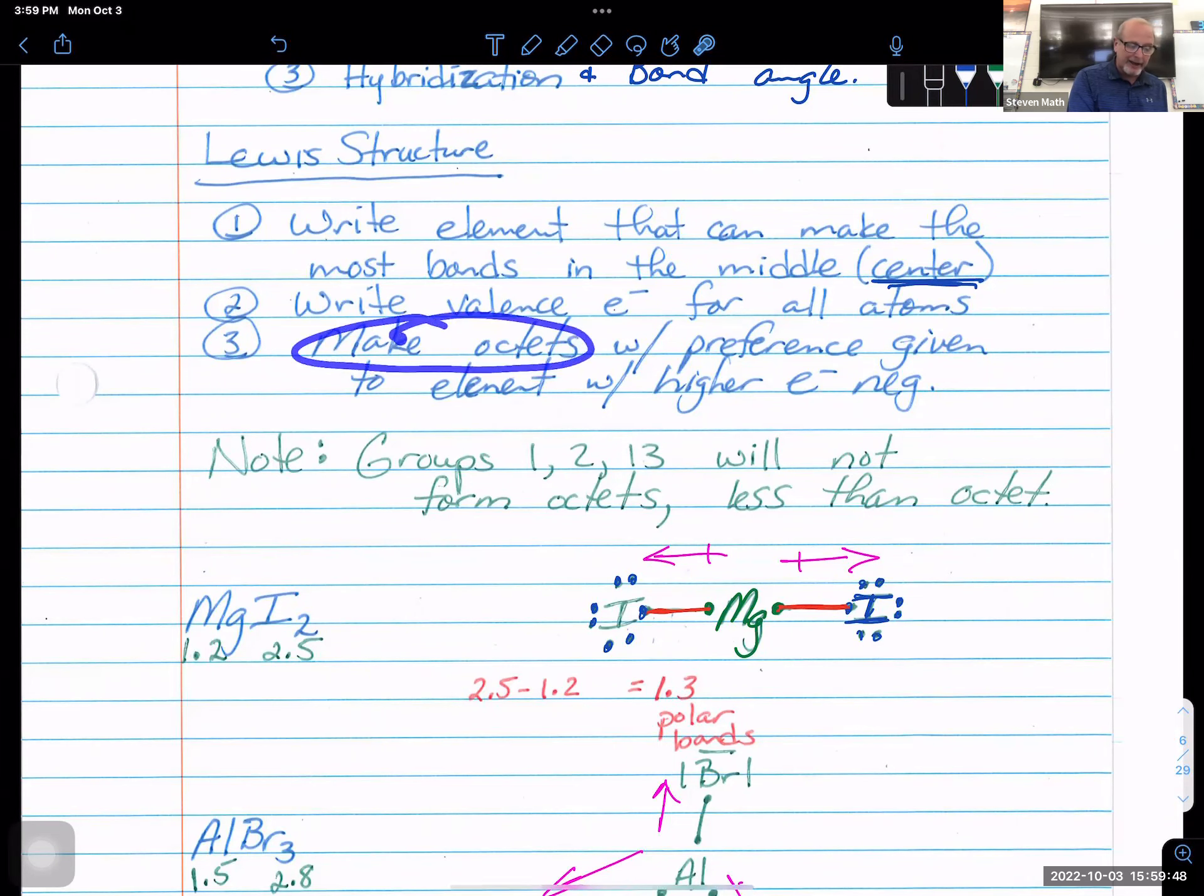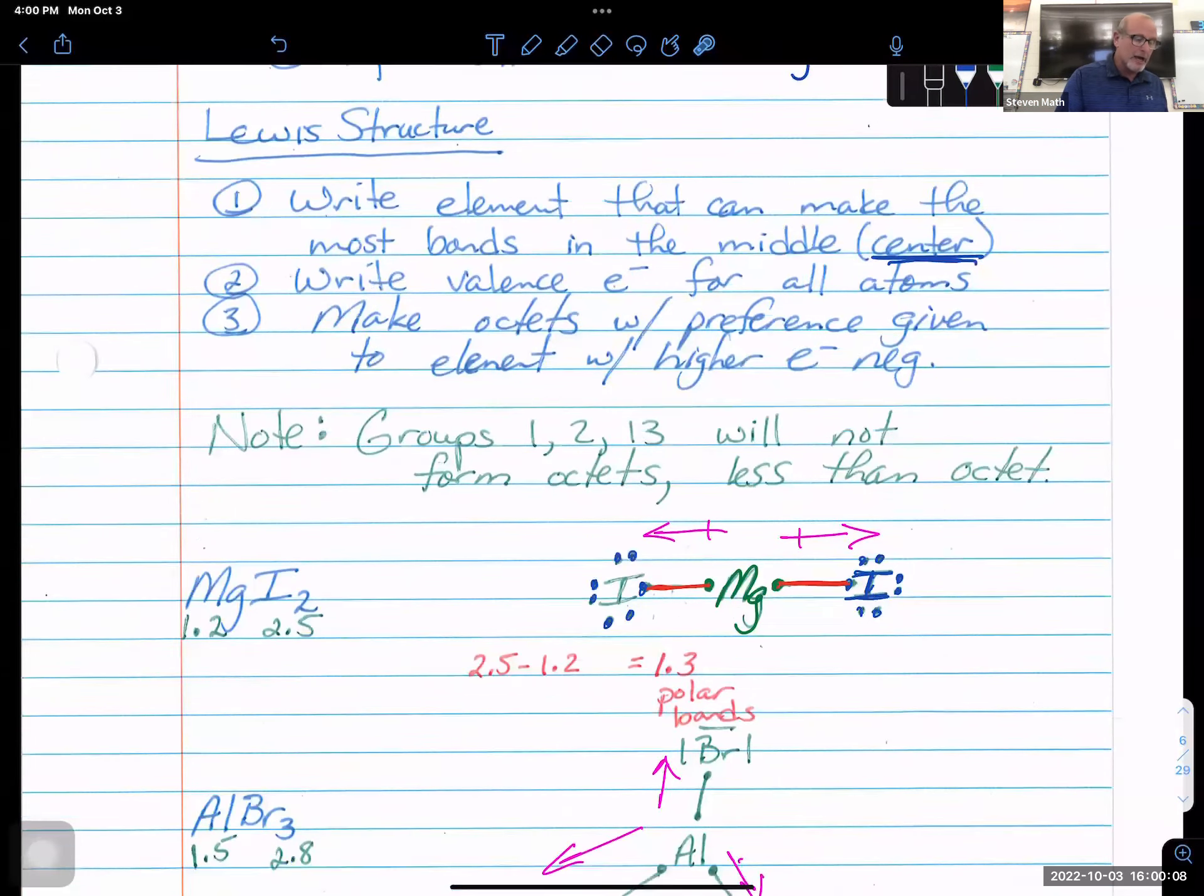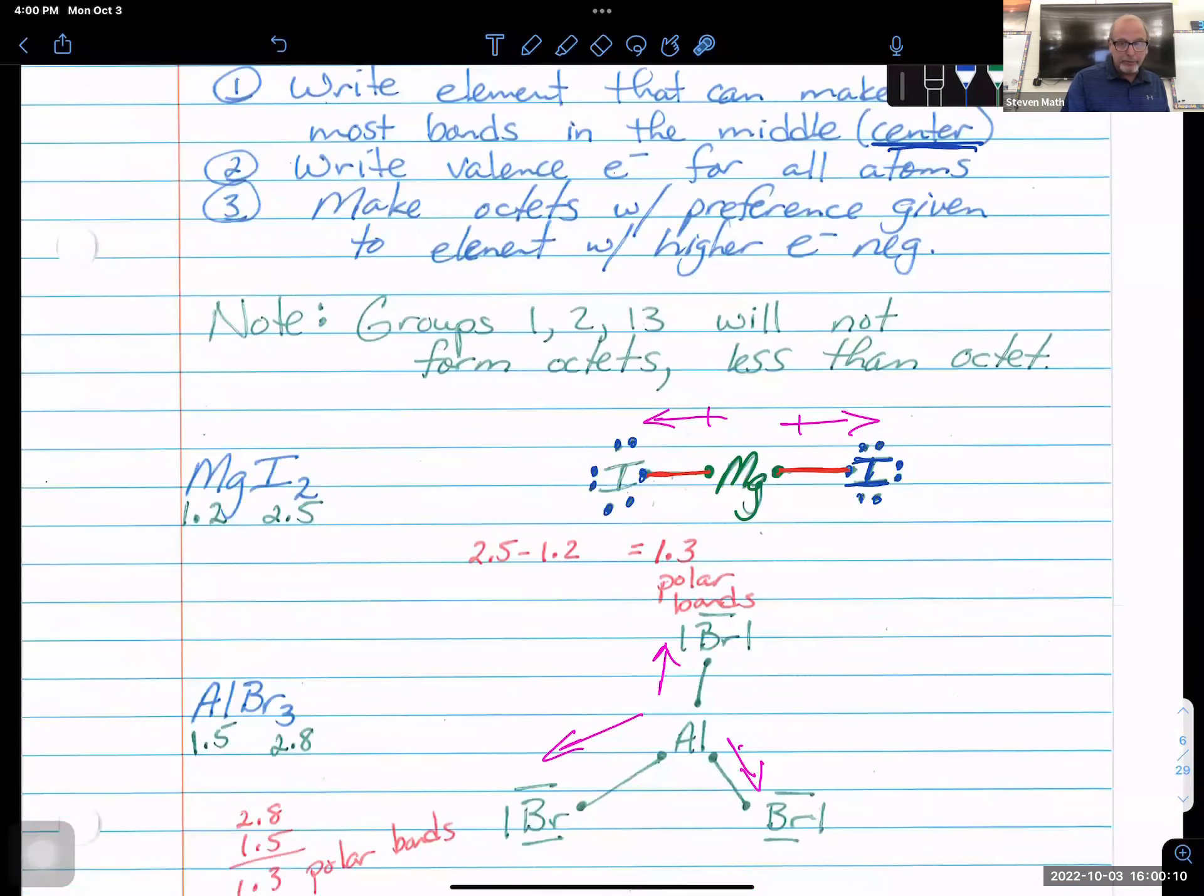And then the next thing you do, then you connect the dots. And we got to make octets with preference given to the element with the higher electronegativity. Elements in the upper right-hand corner are the ones that are going to get the preference for their higher electronegativities. Note, this one's an important one. Groups one, two, and 13 will not form octets.